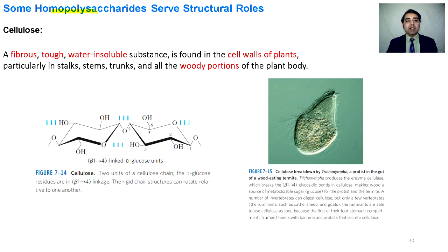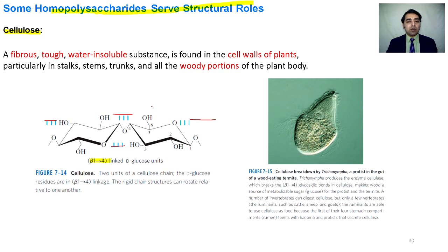Some homopolysaccharides have a structural role. Cellulose is a polymer made by beta-D-glucose through beta-1,4-glycosidic bonds. The beta-D-glucose units are joined in a way that they make hydrogen bonds with each other. Because of these excessive hydrogen bonds, cellulose has a tough structure and is insoluble in water.